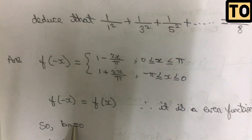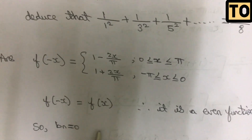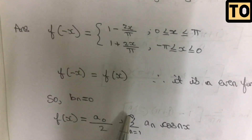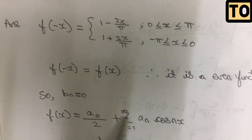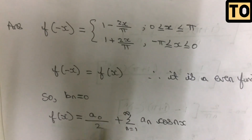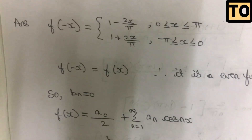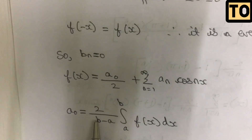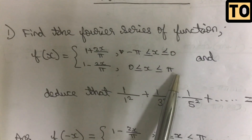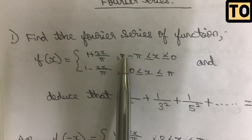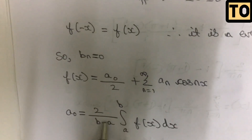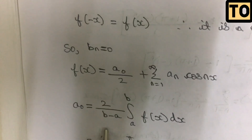We will find the b suffix value and a suffix value. Since it is an even function, the b suffix total term is 0. This is the general formula with a null value and a suffix value. We have a starting limit and an ending limit. The a value is minus pi and b value is pi.